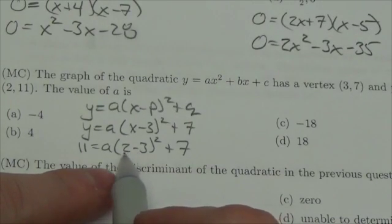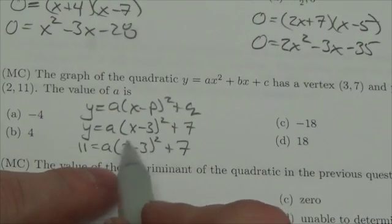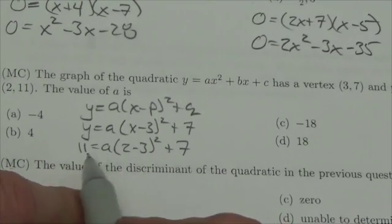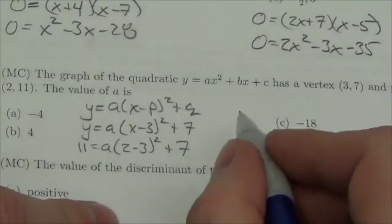What we're going to do here is 2 minus 3 will be negative 1 squared, will be positive 1, so that's not really going to affect the value of a. Just bring the 7 over and then we're going to get...